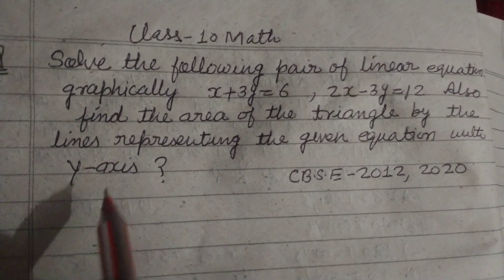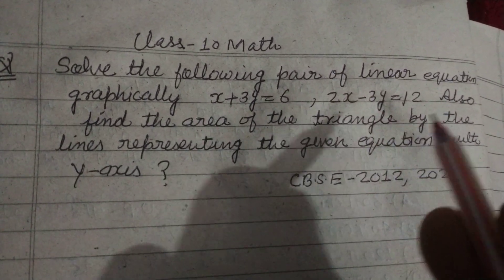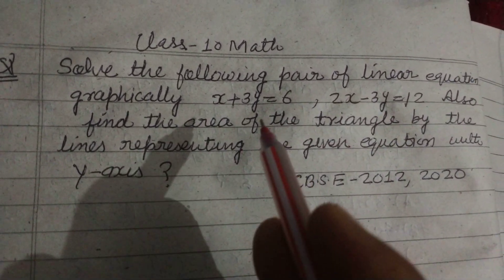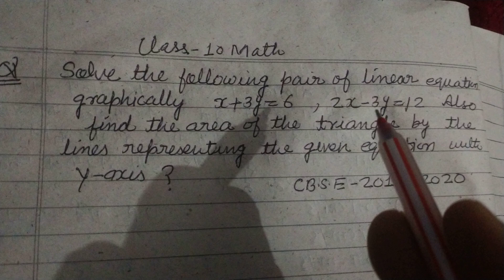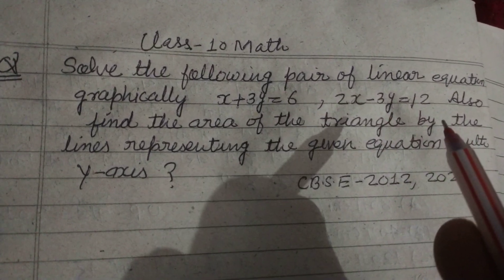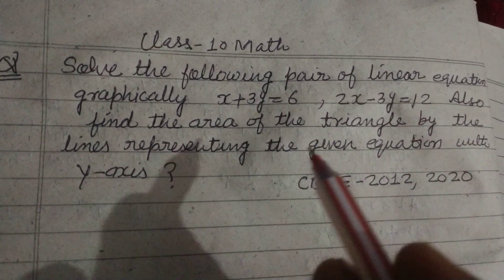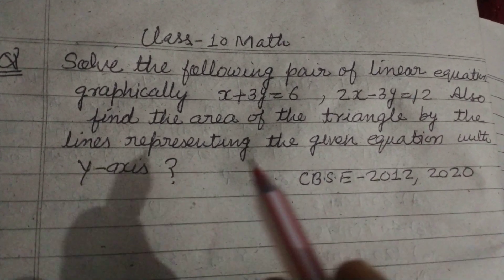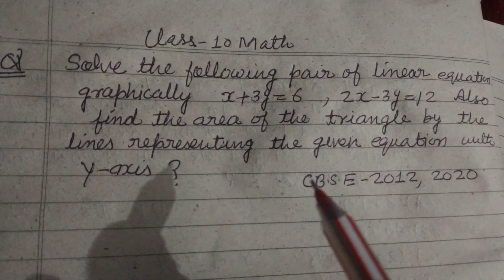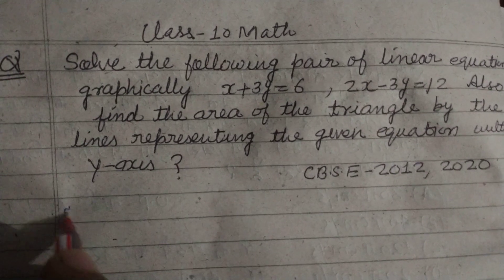Question is: Solve the following pair of linear equations graphically, x plus 3y equal to 6, 2x minus 3y equal to 12. Also find the area of the triangle by the lines representing the given equation with y-axis.